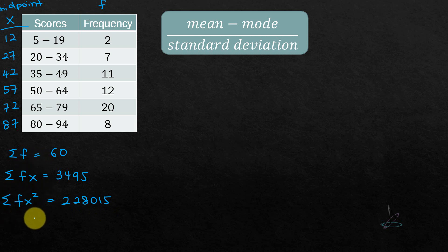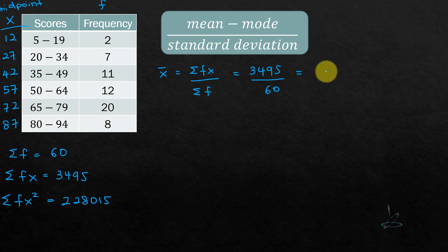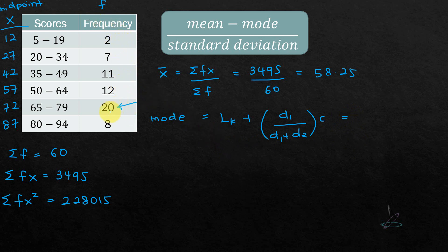The mean = summation of fx / summation of f = 3495 / 60 = 58.25. To calculate the mode for grouped data, use the formula: mode = Lk + [d1 / (d1 + d2)] × c. The modal class is the one with the highest frequency, which is the class 65–79 (frequency 20).